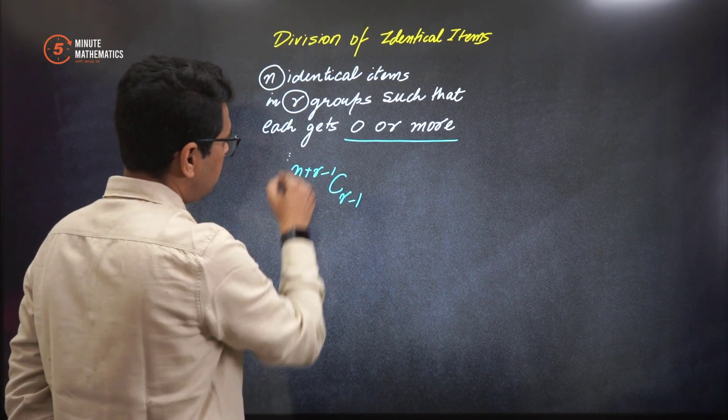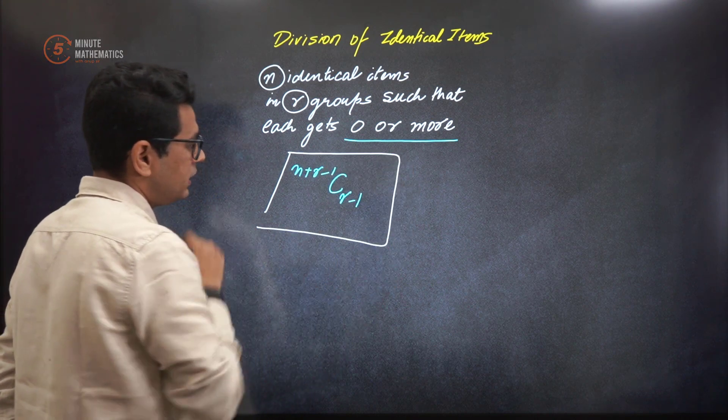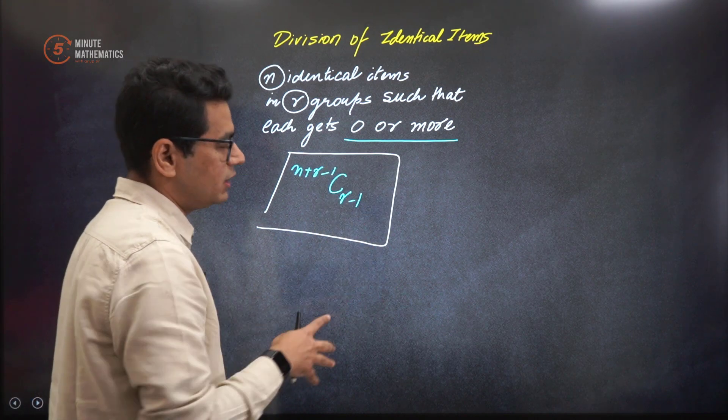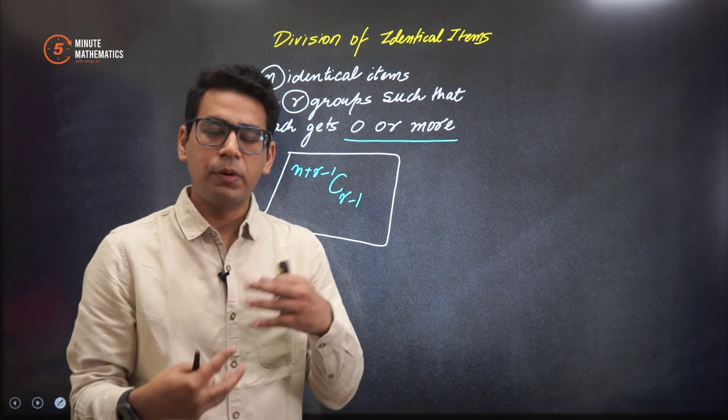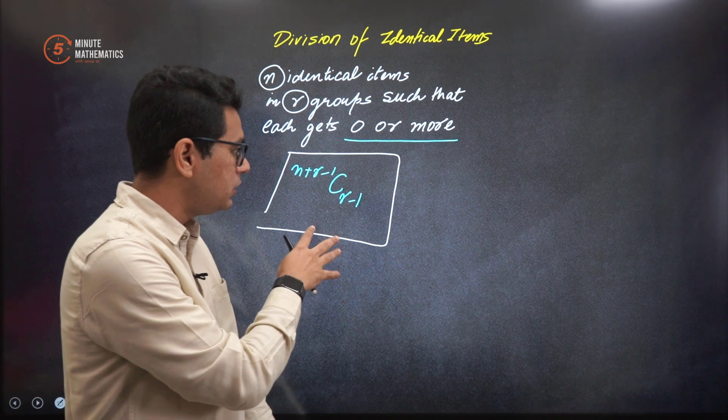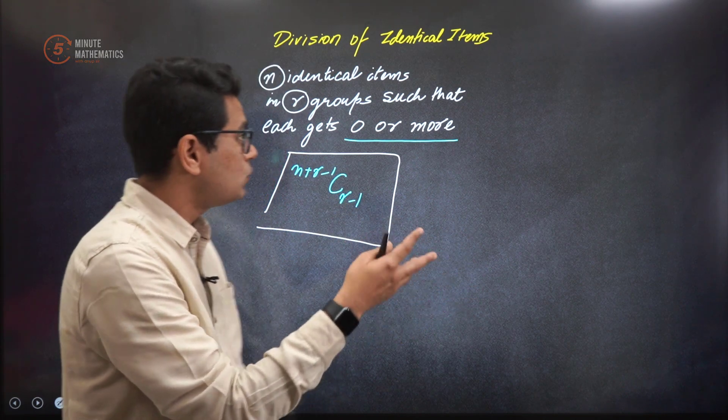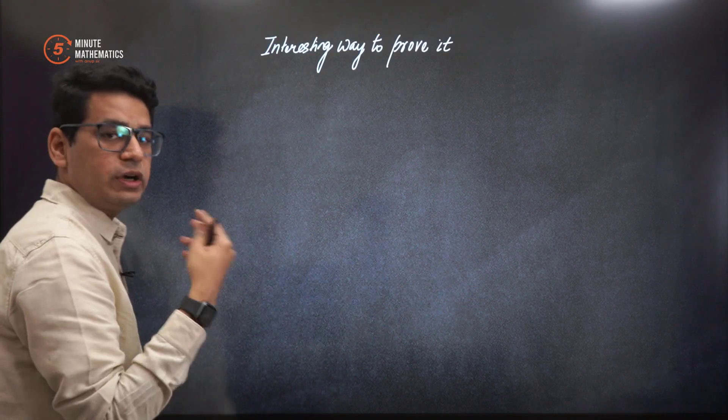Formula is there in front of you. The formula is N plus R minus 1, C, R minus 1. And in many places, we go to the top of you. The problem is that formula looks very simple, but we forget it. So I am going to tell you an interesting way to prove it or rather remember it.